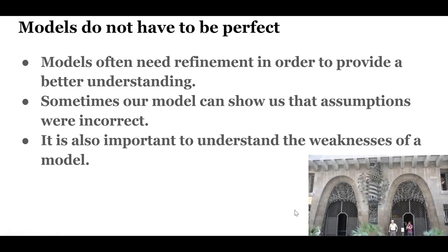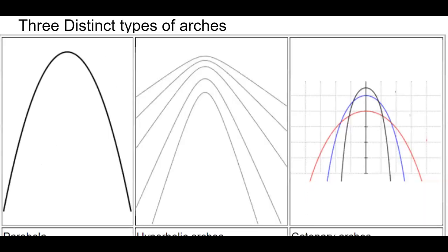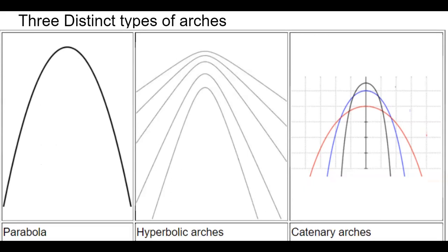We're going to look into this with an example of an arch where many people might assume that it is a parabola. In fact, online I found a few sources, including Wikipedia, that said this was a parabolic arch. Just because it looks like a curve doesn't mean it's a parabola. If we look at three distinct types of arches — parabolic arches, hyperbolic arches, and catenary arches — they all have different formulas that, if graphed, produce different curves.